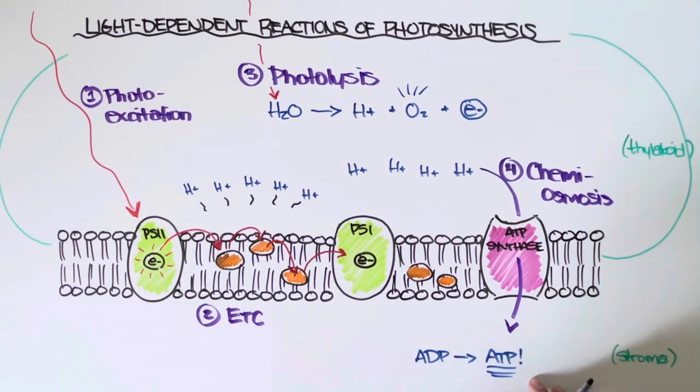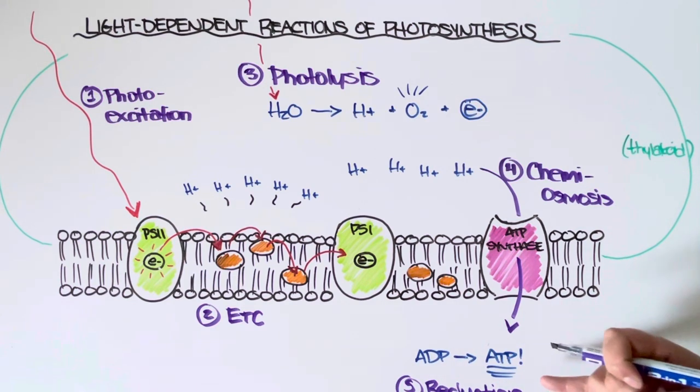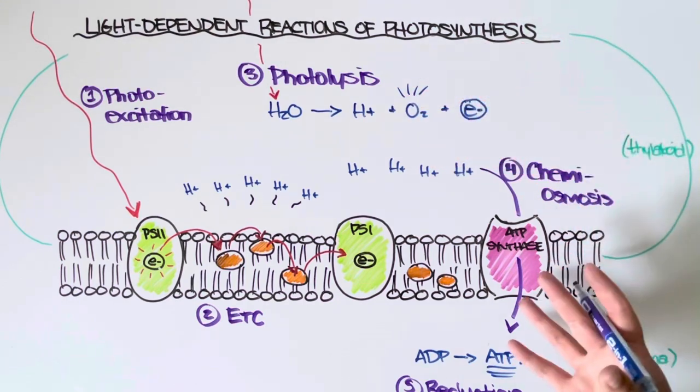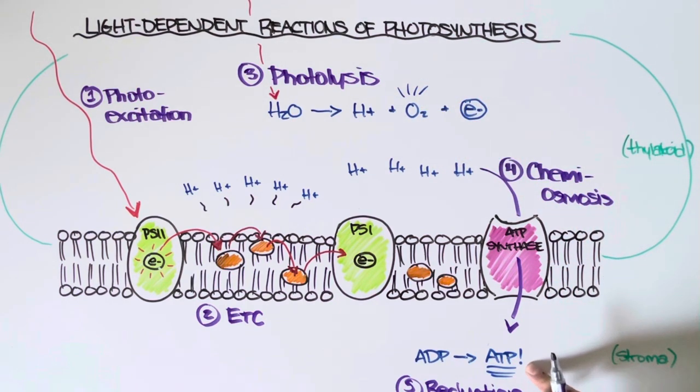ATP will go on to fuel the second step, which are the light independent reactions. And this step here, since we are gaining an electron to convert ADP into ATP, that is called reduction. So really, the first five steps are all to facilitate eventually this reduction reaction. The photoexcitation that generates an energized electron in PS2, the first step of the electron transport chain, the building of that hydrogen ion gradient, all of it is used for chemiosmosis, so that we can eventually end up making a molecule of ATP. A lot of work for one little molecule, although it's an important one.